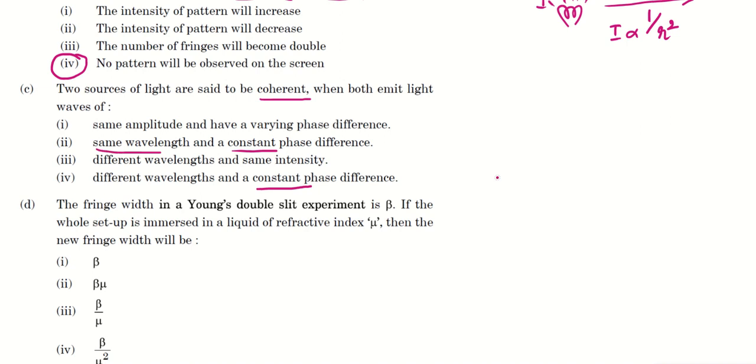So one is actually same wavelength and another one is different wavelength. Please remember that the interference pattern can be seen or produced for the monochromatic light, which means they should have same wavelength.